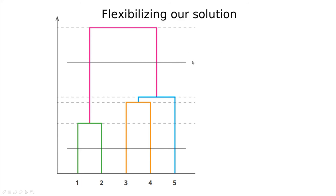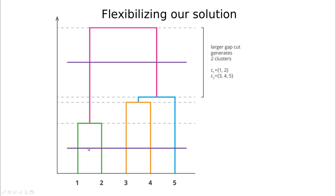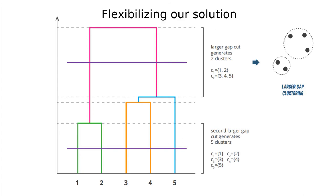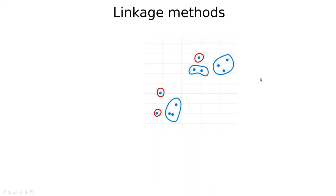Sometimes the differences are not huge and a couple of solutions could be winning. We compare the heights of horizontal lines: maybe this is the largest distance giving two cuts and two clusters, but a comparable jump could give five clusters instead. When it's ambiguous, we have to compare different metrics or use cross-validation — removing some data points to see if solutions converge.